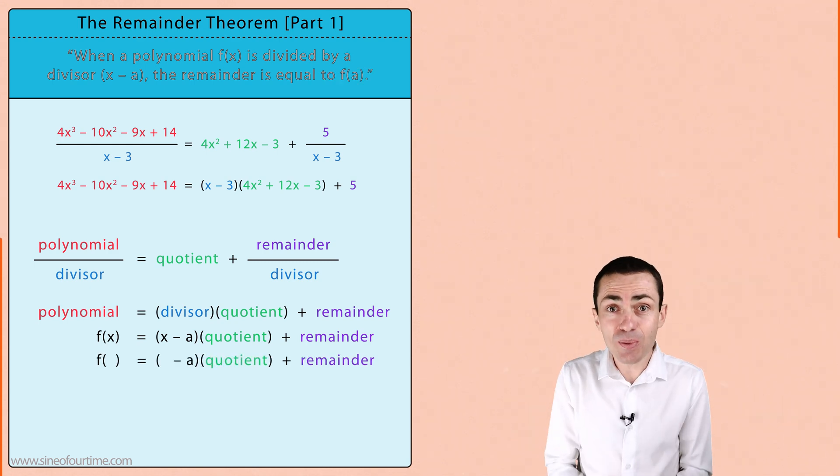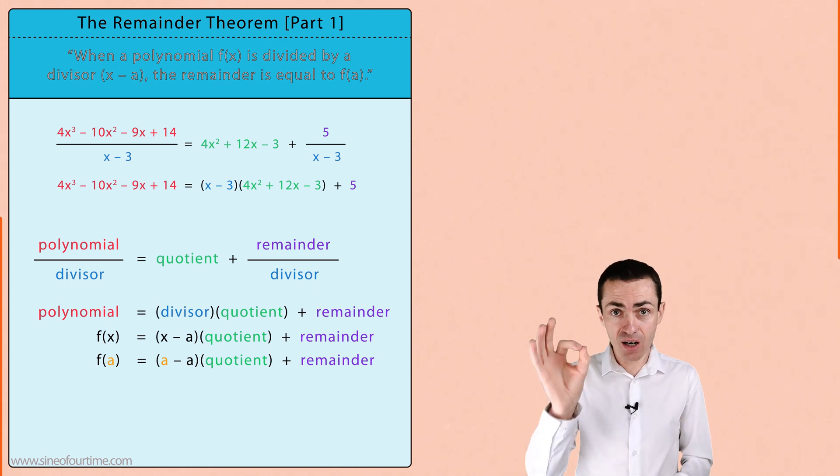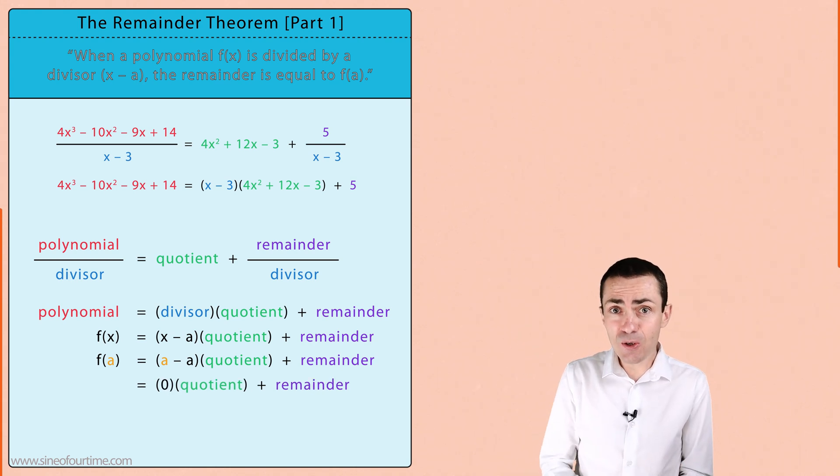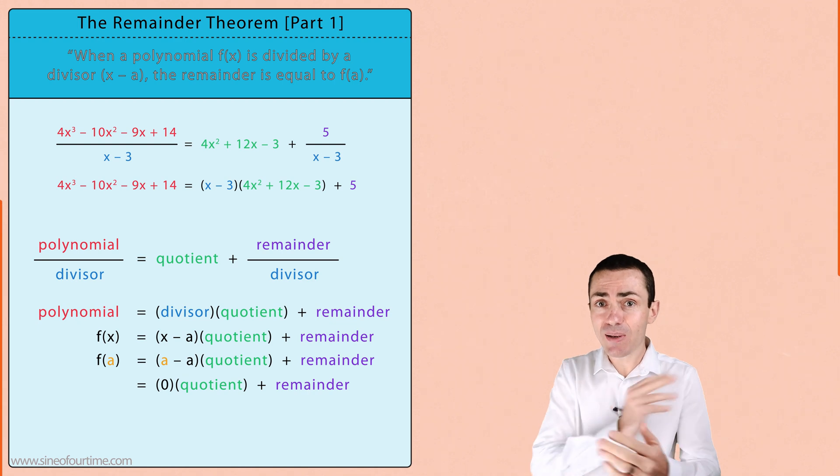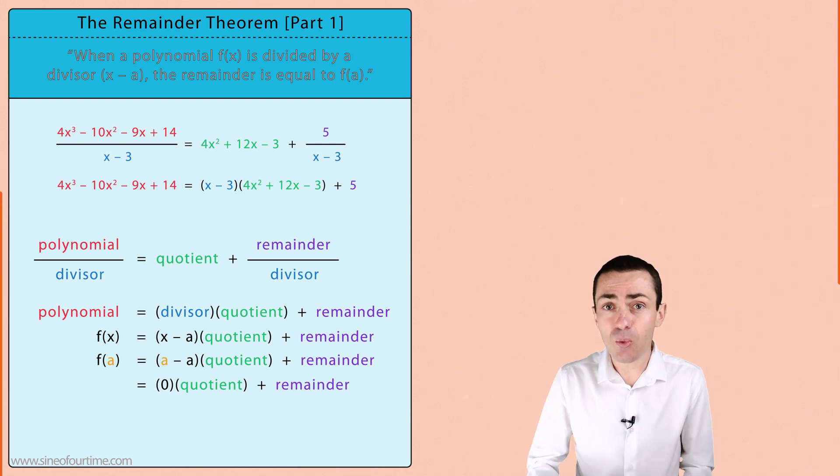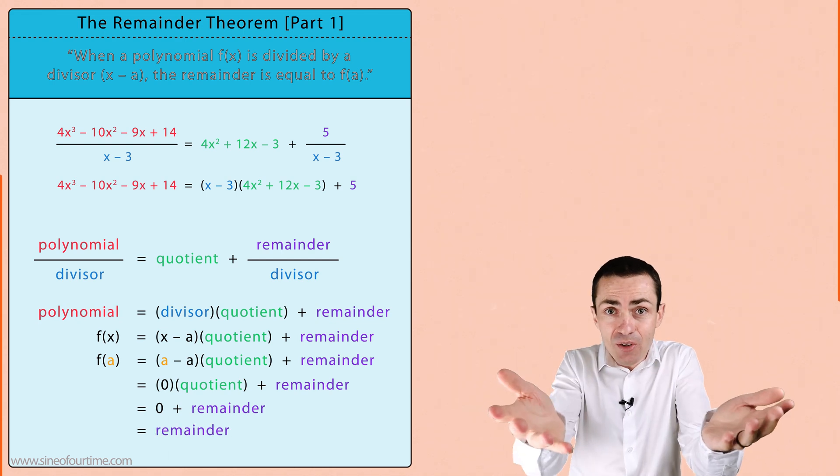This worked because substituting a in place of x left us with a divisor of zero. Of course zero multiplied by a quotient plus a remainder just left us with zero plus the remainder which just left us with the remainder.